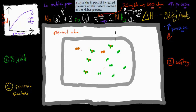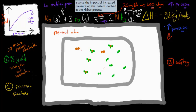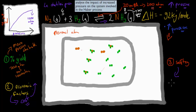This is where this whole dot point comes into play. Analyzing the impact of increased pressure on the system involved in the Haber process: first, we need to consider the percentage yield — the more pressure, the better. But we're using roughly 200 atmospheric pressure and not a thousand. Economic factors are one reason: if we have very high pressure, it would cost a lot of money because we would have to have really strong tubes to withstand that pressure, and overall it's just not economically viable. Another reason is safety — if you have a thousand atmospheric pressure, that's so much pressure that the equipment could break and just cause all kinds of havoc. The safety concern of it breaking and causing damage is also the reason why we use 200 atmospheric and not a thousand.